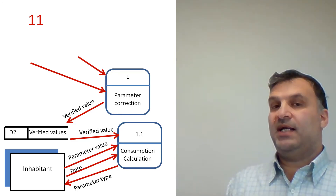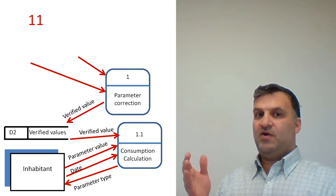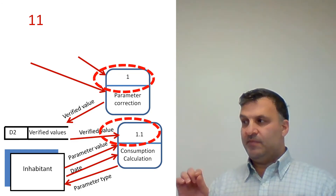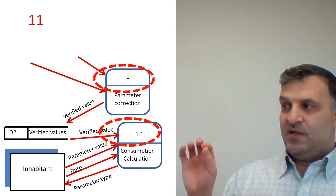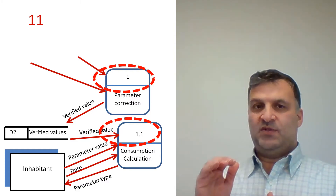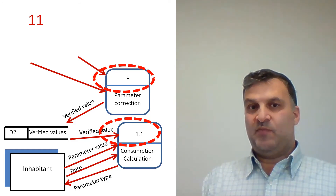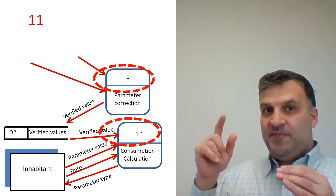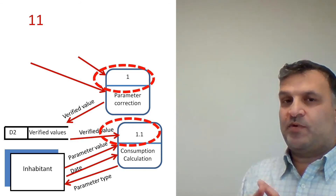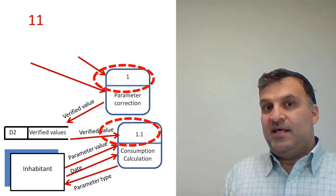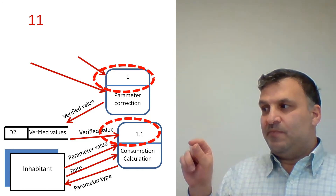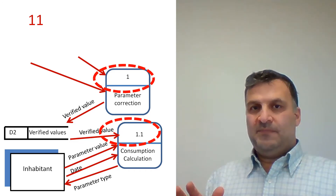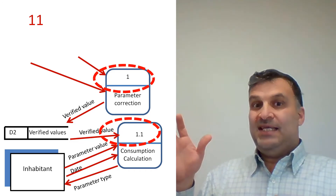What is the problem here? We are not at the context level or level 0. You can see that we have process number 1 and process number 1.1. Process 1.1 should be a child of process 1, so we cannot show them in the same diagram — they are not at the same level. Process 1 should be detailed by zooming in, and that zoom produces a complete child diagram which contains process 1.1. So process 1.1 exists in a diagram that represents process 1, but it does not contain process 1 itself.